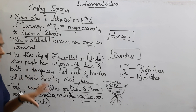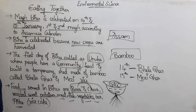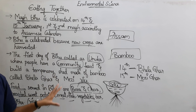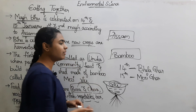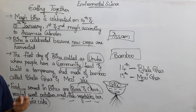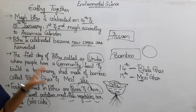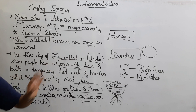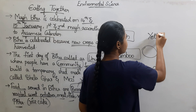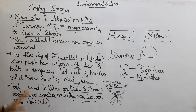We celebrate the festival on the 14th and 15th, sharing food in the community. They also play drums, sing songs, dance and enjoy. Ladies wear yellow color dress. These are the key points to mention about this chapter.